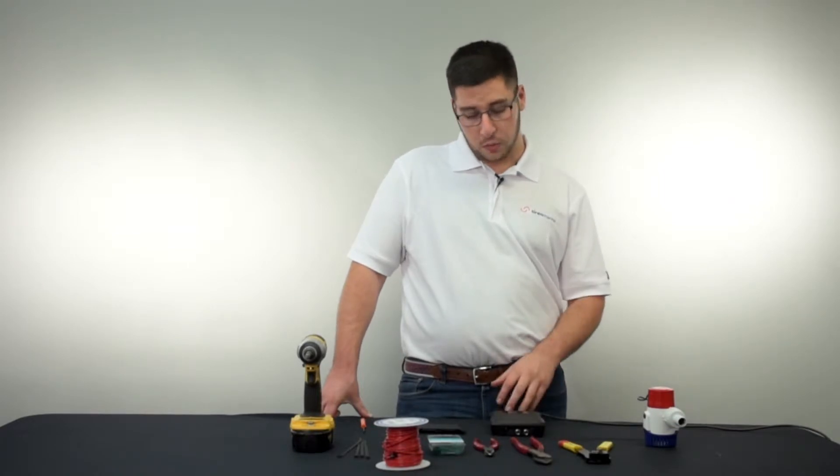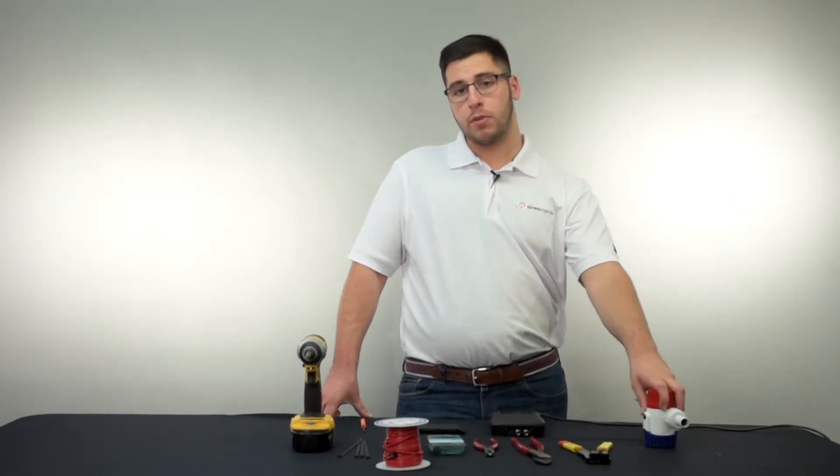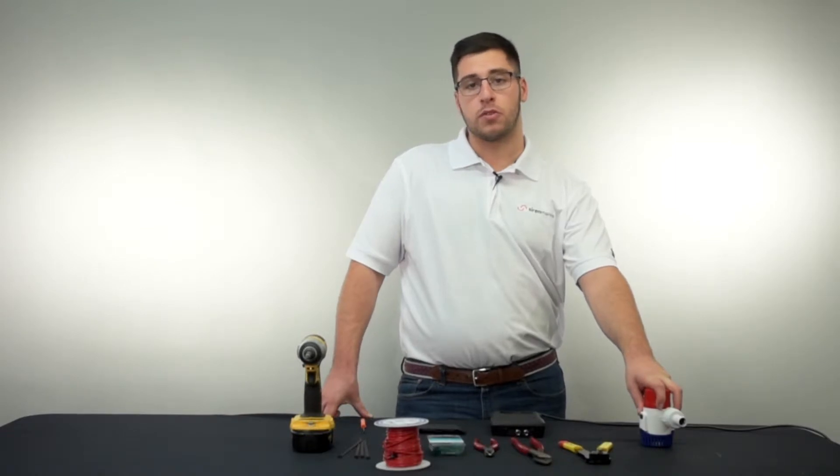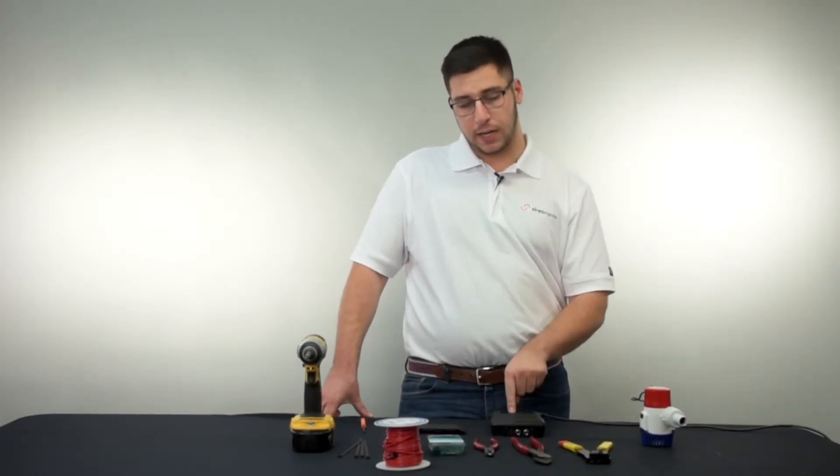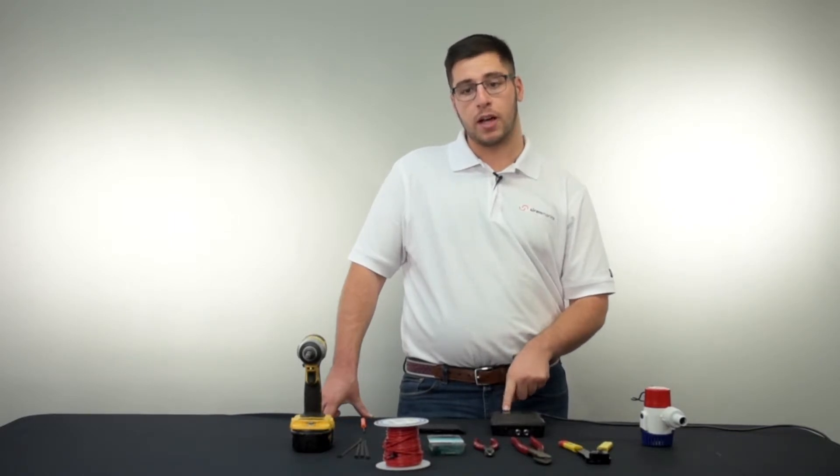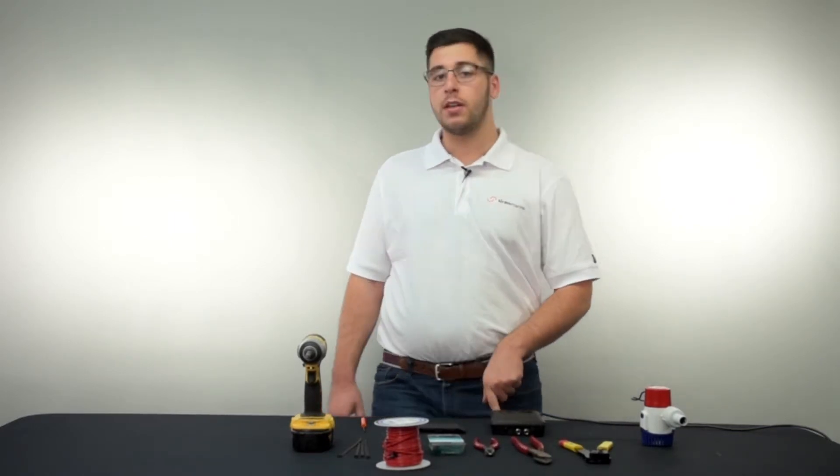So in this video we'll be doing the bilge pump installation. Our bilge pump inputs are looking for a positive 12 volts, so we're gonna be splicing off the hot lead of our pump and terminating it directly on our MTC in the bilge pump one input.